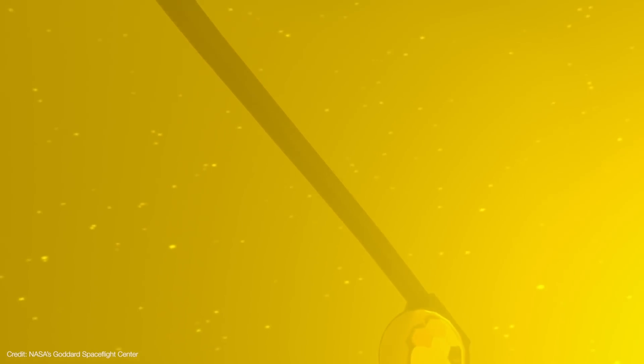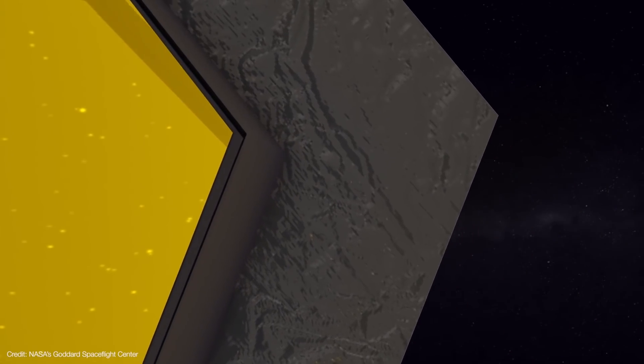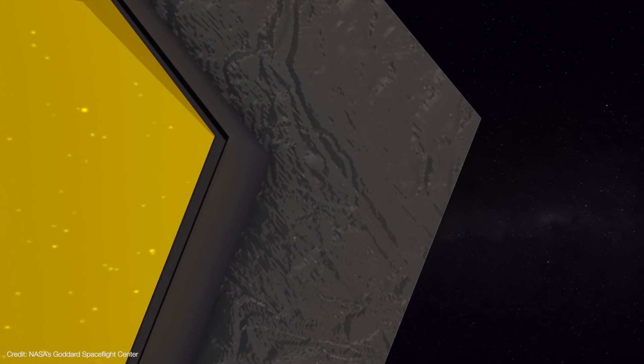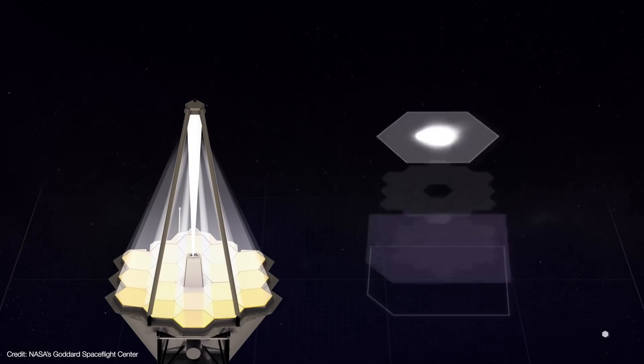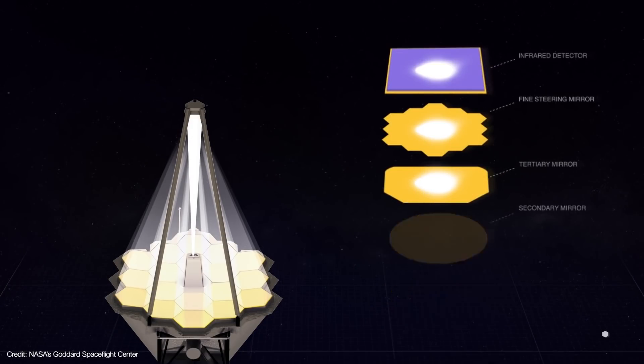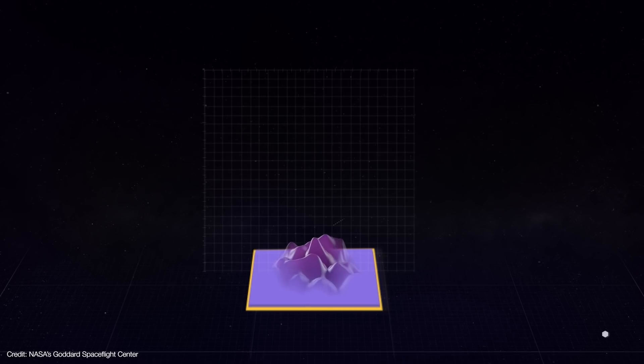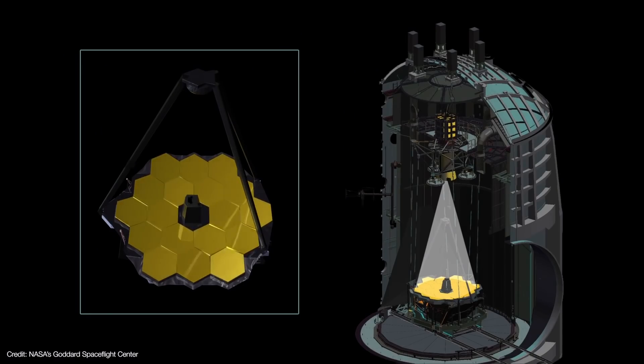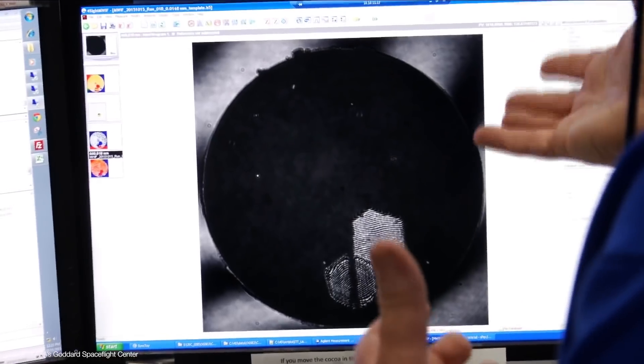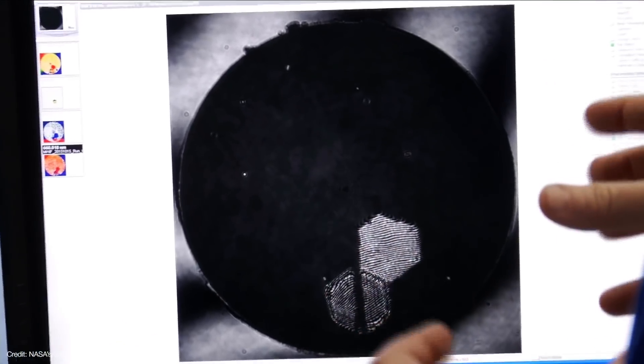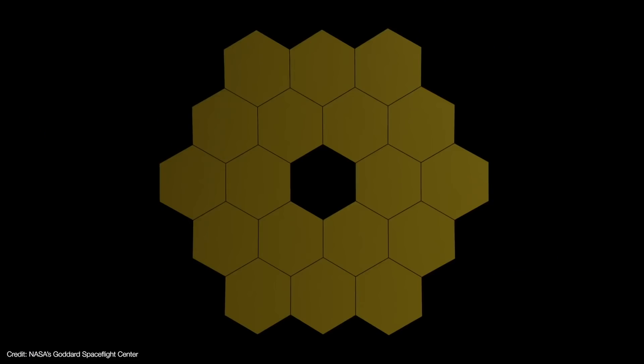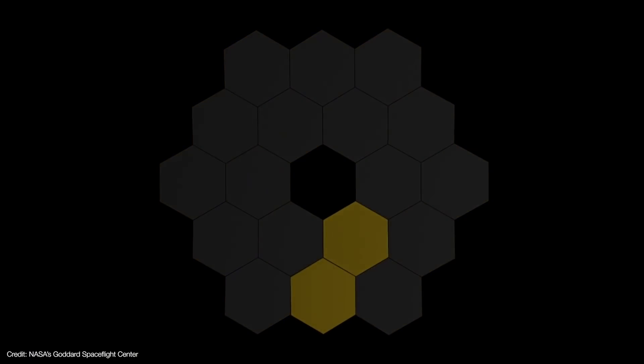After each tiny adjustment, the image's point spread function is analyzed. A point spread function is essentially a plot of a point source's intensity on an array of pixels. The Webb team develops special algorithms that analyze the PSF and work out just which actuator on which mirror segment needs to move next and by how much.